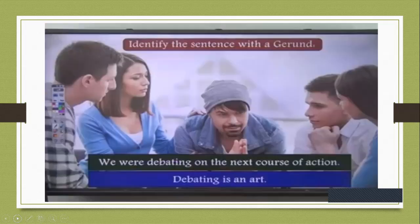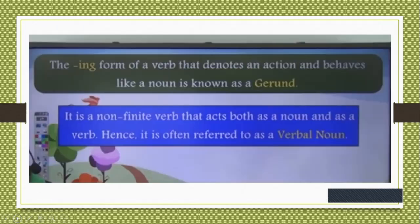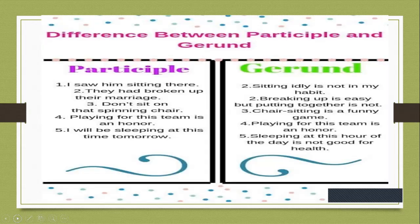'We were debating on the next course of action' — and 'Debating is an art.' In the first sentence, debating is a finite verb because it is in continuous tense. In the second sentence, 'Debating is an art,' I am talking about debating as a subject — that is a gerund. The -ing form of a verb that denotes an action and behaves like a noun is a gerund. A non-finite verb that acts as both a verb and a noun is called a verbal noun.